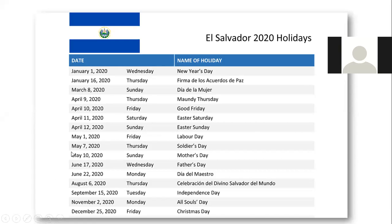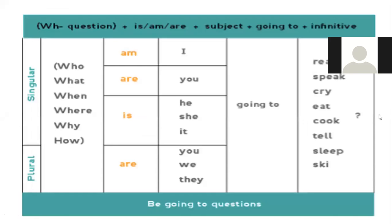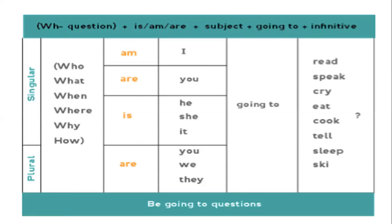Han practicado como decir las fechas a través de los holidays. Now we are going to talk about WH questions using the verb to be: am, is, are, plus a subject, plus going to. If you remember, we also used going to yesterday to talk about the future — near future, para hablar del futuro cercano. When we use going to for questions, we focus on information questions like who — quién, what — qué, when — cuándo, where — dónde, why — por qué, and how — cómo.